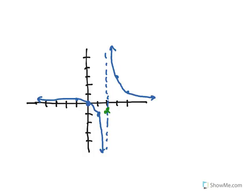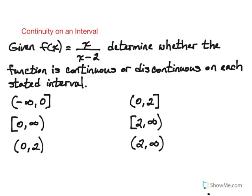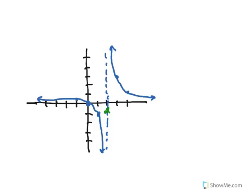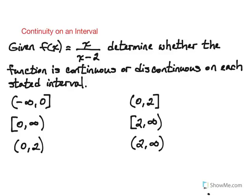So the first one we're going to look at is the interval from negative infinity up to and including 0. So starting at the far left coming along that branch in the second quadrant up to and including 0, all is good there. There's no breaks, no holes, no asymptotes. So this function would be continuous and I'm just going to, for efficiency sake, mark c for continuous.